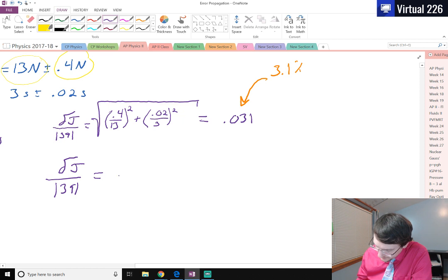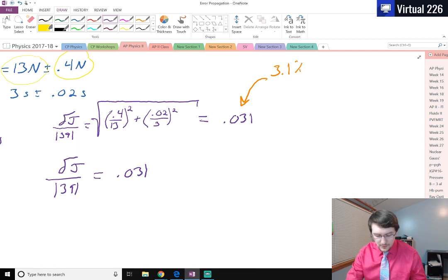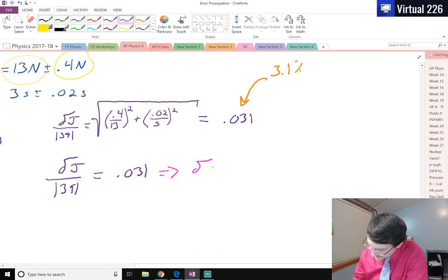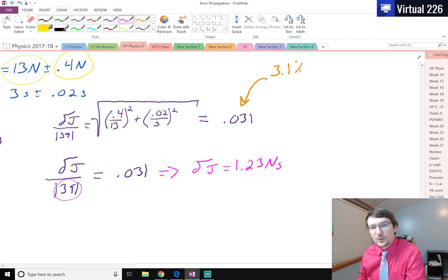So when I have this value, when I say that the deviation of J over the absolute value of 39 equals 0.031, whenever I multiply by the 39, 0.031 when I multiply that by 39, I find out that the deviation on J is equal to 1.23 newton seconds, because remember the unit of the 39 was newton seconds as well.